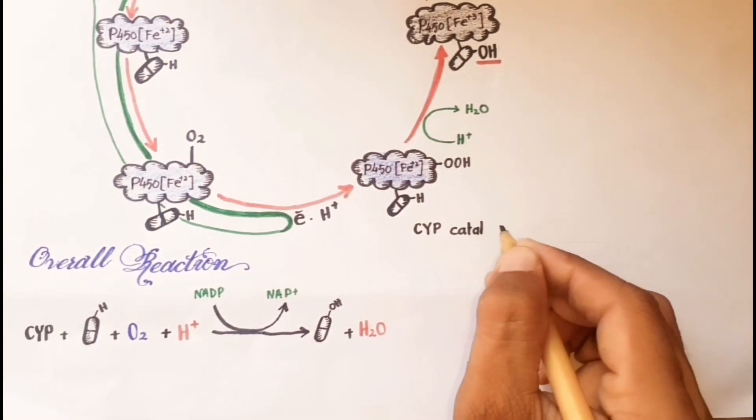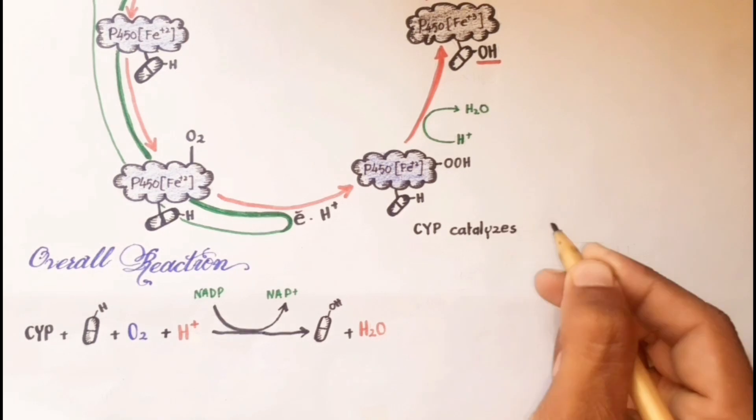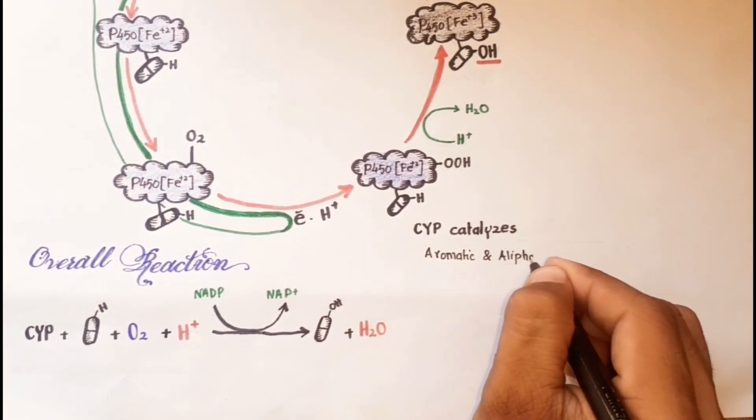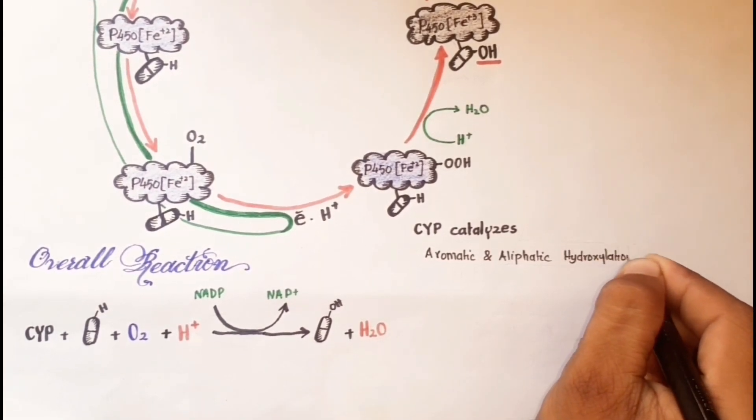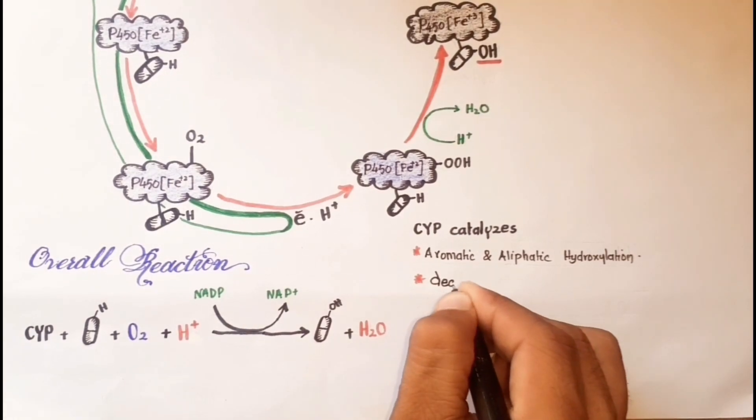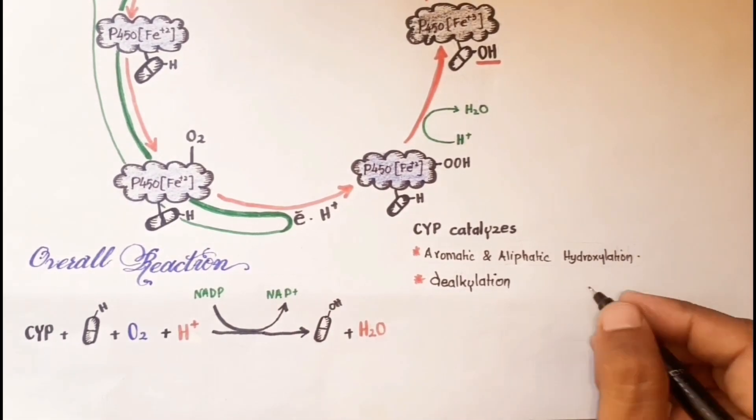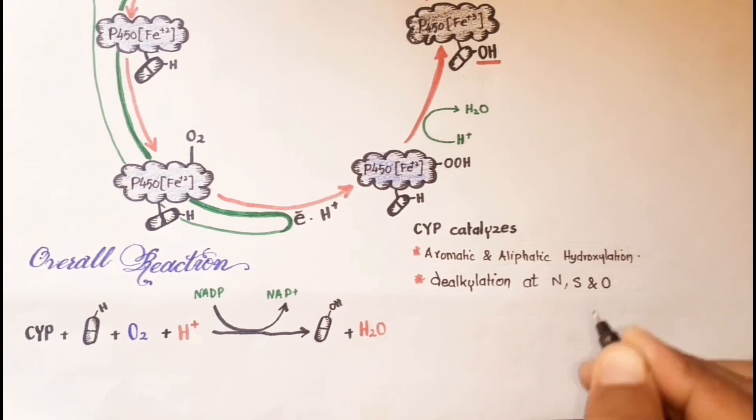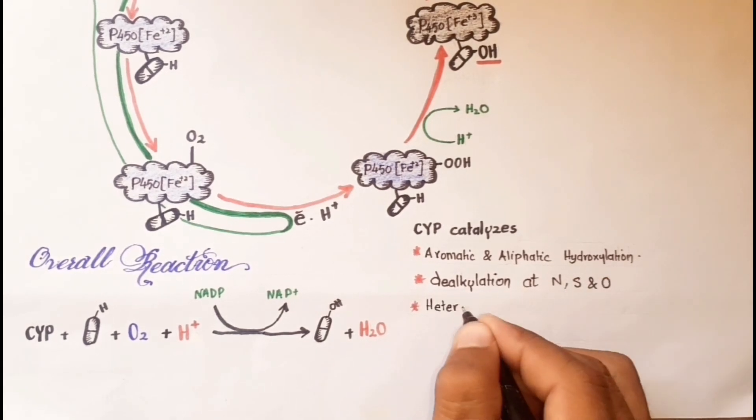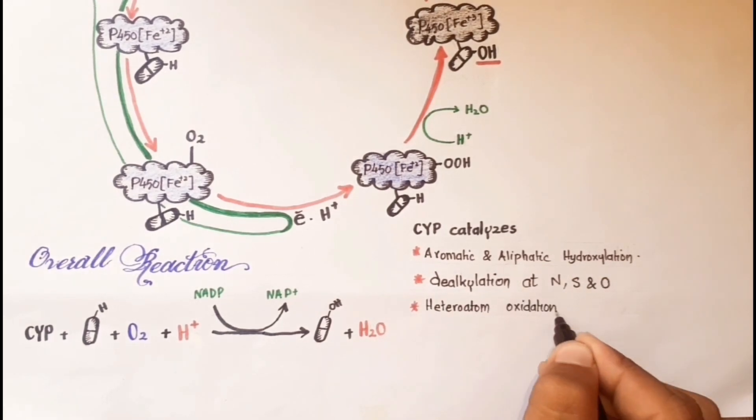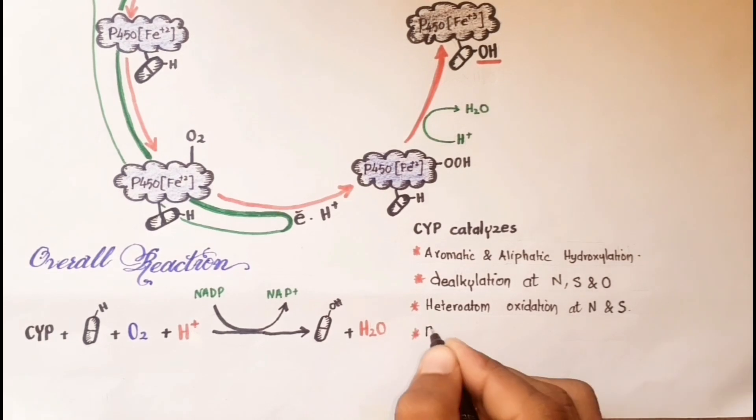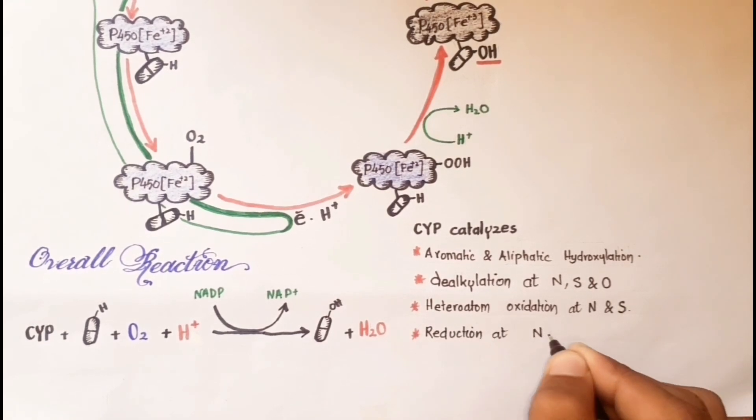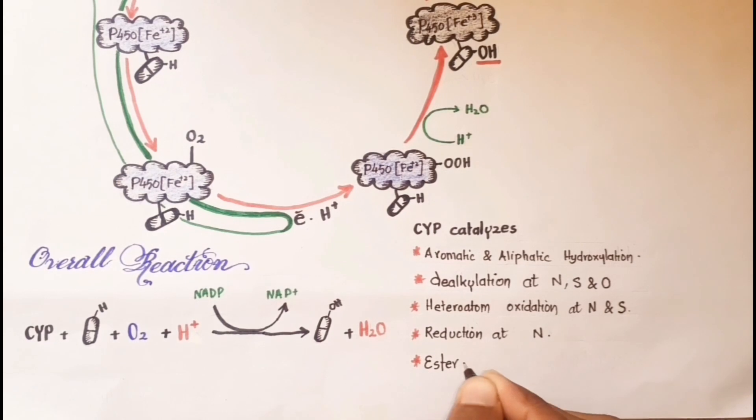Cytochrome P450 catalyzes several reactions, including aromatic and aliphatic hydroxylation reactions, dealkylation at nitrogen, sulfur, and oxygen atoms, heteroatom oxidations at nitrogen and sulfur atoms, reductions at nitrogen atoms, and ester and amide hydrolysis.